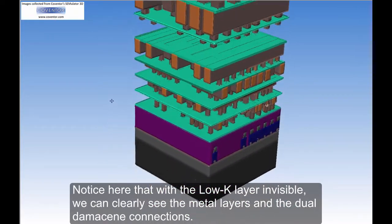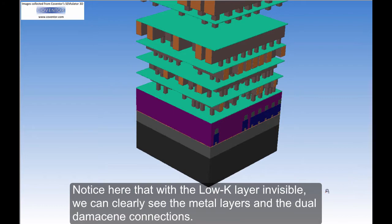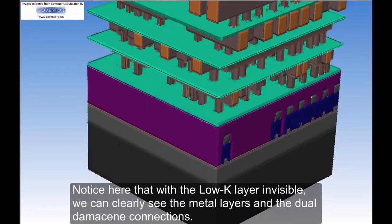Notice here that with the low-K layer invisible, we can clearly see the metal layers and the dual damascene connections.